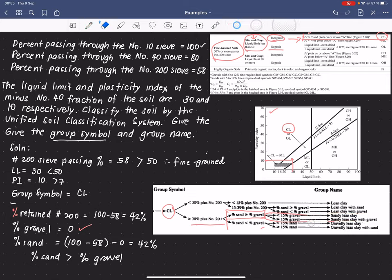Hence, we have this data here that will indicate the group name of our given soil, which is sandy lean clay. Therefore, the group name is sandy lean clay.